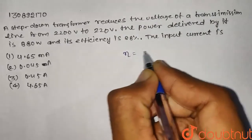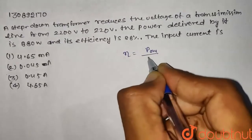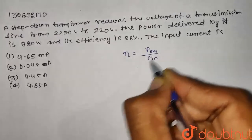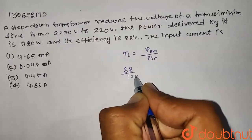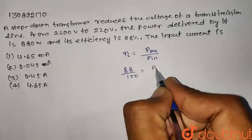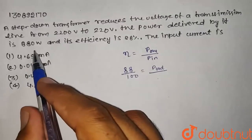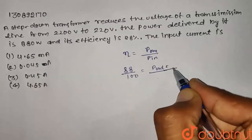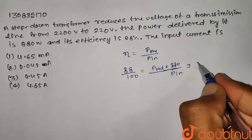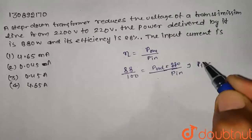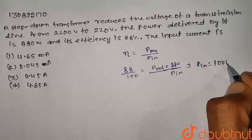The efficiency is P output divided by P input. So 88 divided by 100 equals P out, which is 880, divided by P in. From this we can calculate the input power. P input is 1000 watts.